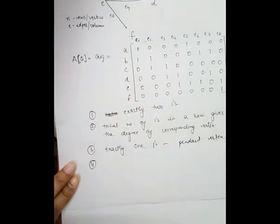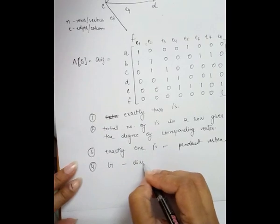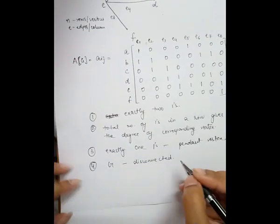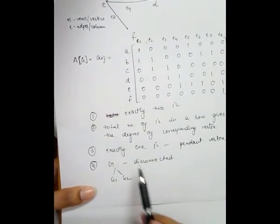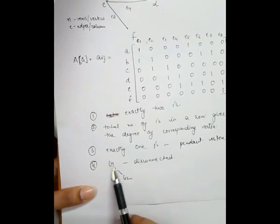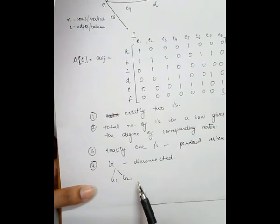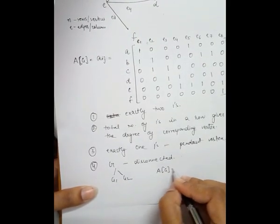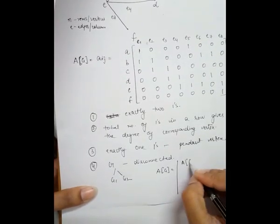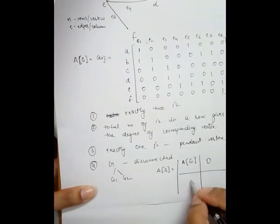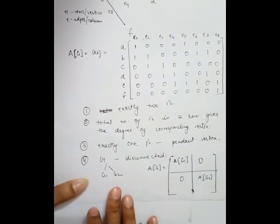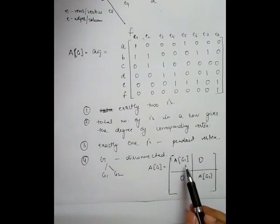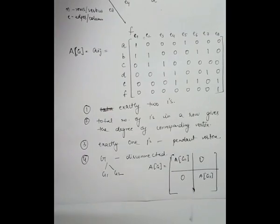The last observation is: if we have a disconnected graph G which consists of two components g1 and g2, then the incidence matrix for this disconnected graph will be represented as A(g1), 0, 0, A(g2) — a block diagonal form — where A(g1) and A(g2) are the incidence matrices of components g1 and g2 respectively.